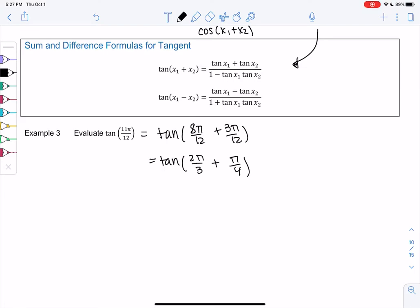And now we have to use an identity. We cannot do tangent of 2π over 3 plus tangent of π over 4. We can't just split up tangents. Algebra doesn't work like that. So we have to use an identity. So we're going to go ahead and use this first identity. x₁ will be 2π over 3 and x₂ will be π over 4.